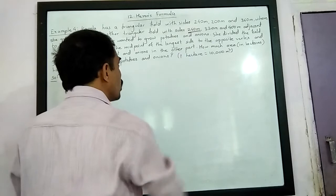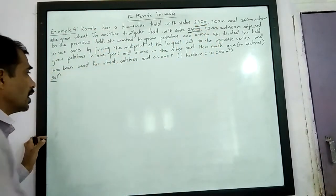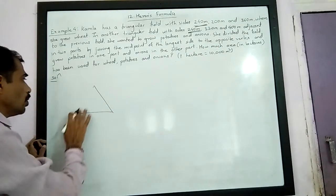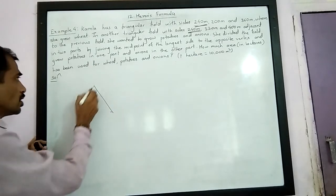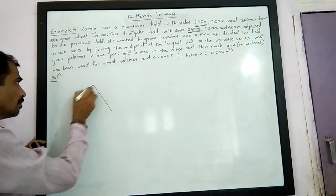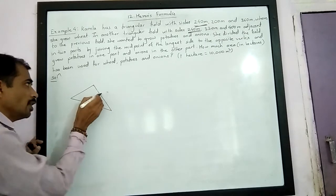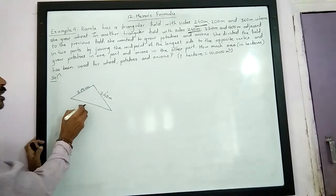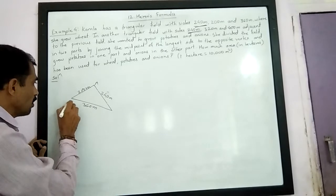240m is the common side to both the triangular fields. Let ABC be the triangular field where she grew the wheat. The sides are 240m, 200m and 360m. Let this be 240m, let this be 200m and the third side be 360m.